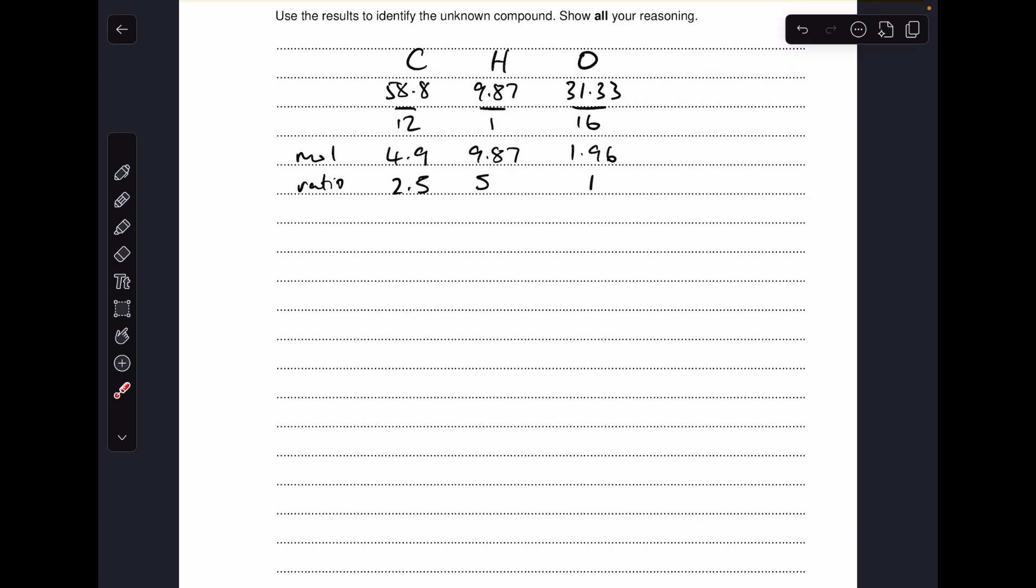Starting with that percentage composition by mass information, we can get the empirical formula. It's just percentage divided by relative atomic mass, that gives us the moles, dividing by the smallest gives us the ratio. But you'll notice that the carbon we've got 2.5 there so we can't bump that up to three, we've got to multiply out.